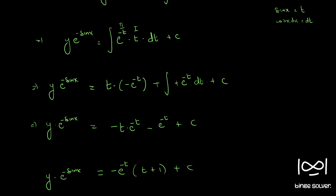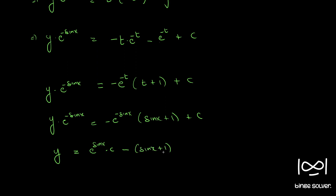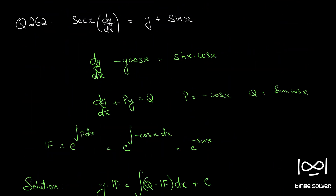Since e raised to t was sin(x), substituting gives minus e raised to minus sin(x) into (sin(x) plus 1) plus C. Multiplying throughout by e raised to sin(x), we have y equal to e raised to sin(x) into C minus (sin(x) plus 1). This is the final answer, where C is an arbitrary constant. These are the steps for the solution to question number 262.